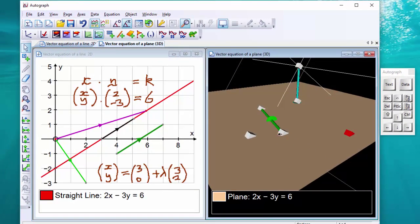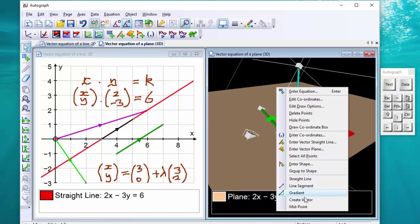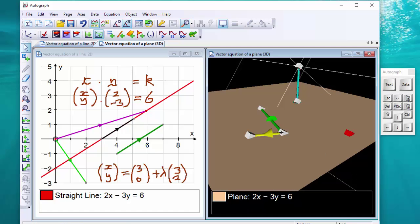I'm going to deselect, select two of them at a time, and right-click, create a vector. So if I add these two vectors together, I should get another point on the plane. Add vectors, and indeed I do.